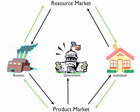Government buys goods and services in the product market. Schools would be an example, and schools purchase equipment like computers in the product market. The money that government uses to buy goods in the product market is called government spending. Government also hires resources — land, labor, and capital — in the resource market for government institutions, and the money paid for that labor in the resource market is also called government spending.